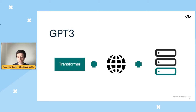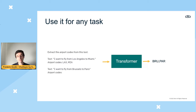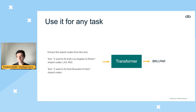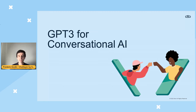They did it for us, so now we can start using it. We have this transformer model trained on massive internet data. We can ask it to do tasks like extracting airport codes — give it instructions and an example, then give it a new sentence like 'I want to fly from Brussels to Paris,' and it generates the airport codes BRU and PAR.